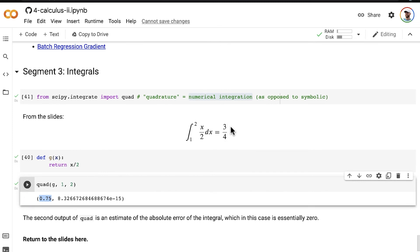which of course is exactly the same as 3 quarters. This second item here is an estimate of the error in this numerical integration. So when we used symbolic rules by hand, there's no sense of some kind of error. When we do numerical integration, there could be some error, but in this case, it's a very,